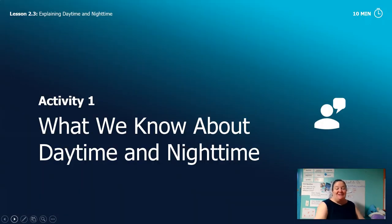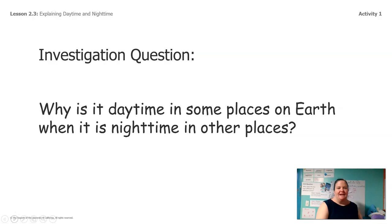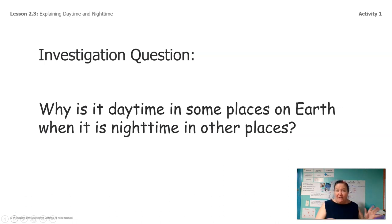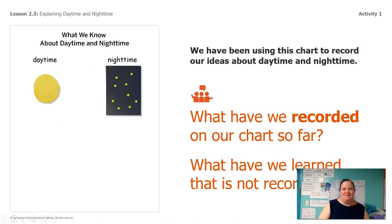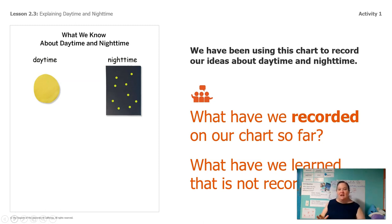So we're going to look at what we know about daytime and nighttime, because we are really close to being able to answer this question about why it's daytime in some places on Earth while at the same time it's nighttime on Earth. So why is it daytime in some places on Earth when it's nighttime in other places?